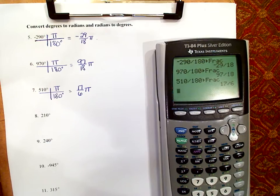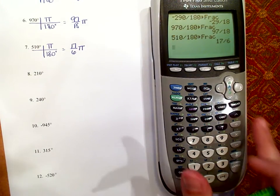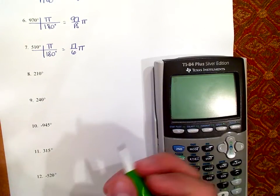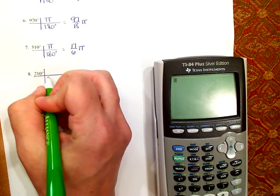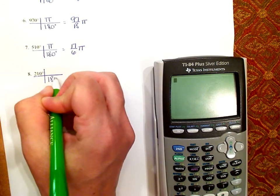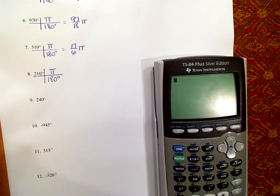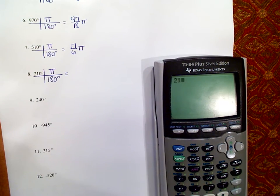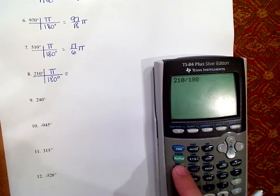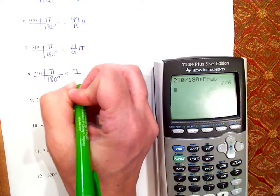Number 8 — 210 degrees. Put 180 degrees on the bottom and pi radians on top. The degrees cancel, so 210 divided by 180, math, enter, enter — is 7 over 6 pi.